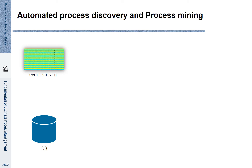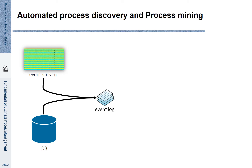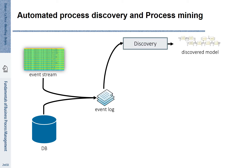We can also understand how a process works by means of automated process discovery, a technique that belongs to the family of process mining. The starting point are event streams and information stored in databases. Information systems that support our processes store this information, which we can organize in terms of a so-called event log. An event log captures how different cases have been processed and can be used to automatically discover a BPMN process model.